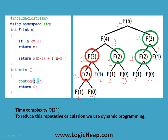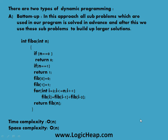The time complexity is O(2^n) when using this recursive method. Now let's see how the time complexity reduces when we use dynamic programming. There are two types of dynamic programming approaches. The first one is bottom-up. In this approach, all subproblems used in our program are solved in advance, and after this we use these subproblems to build up larger solutions. Let's see this with the same example.